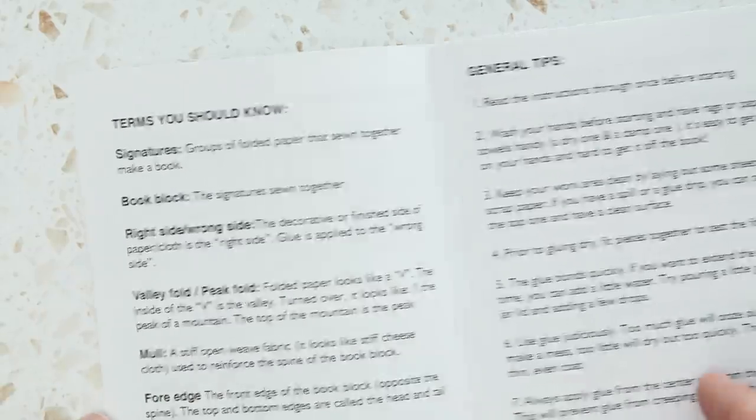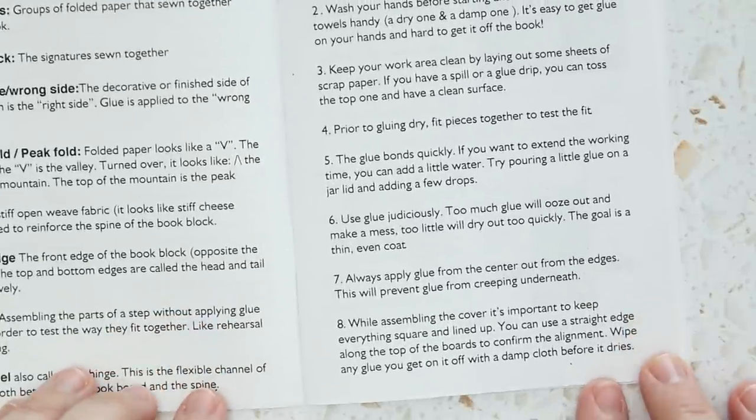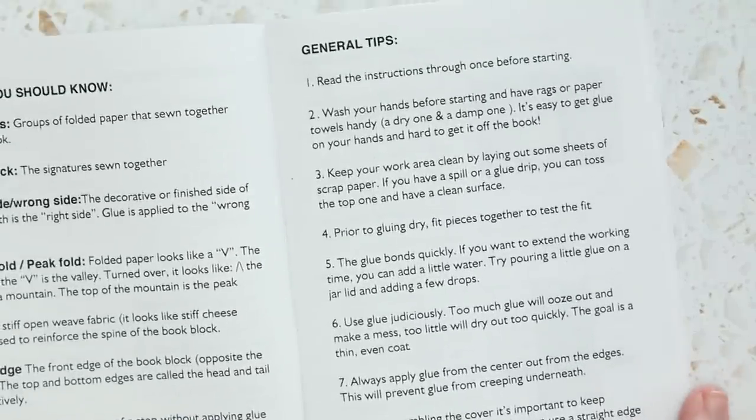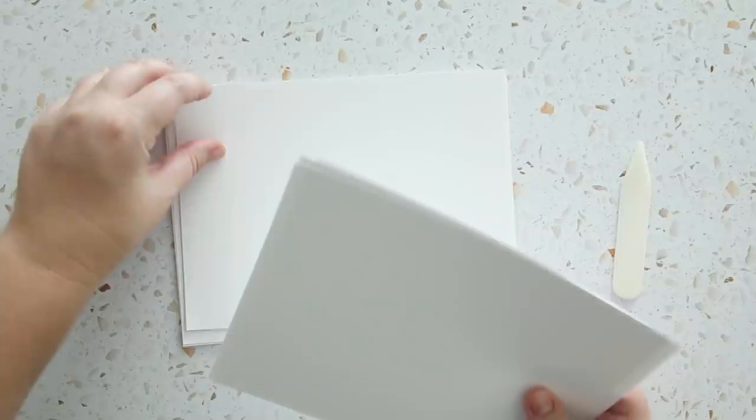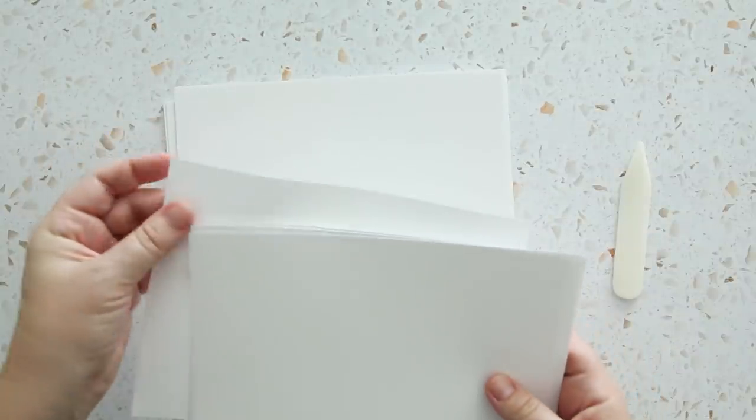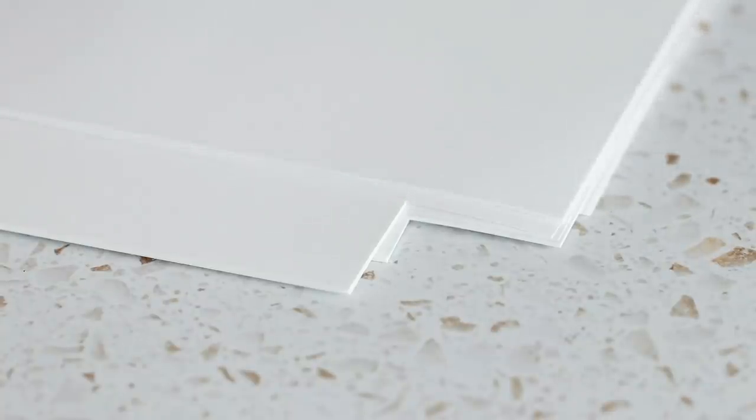It's nice that the instructions include terms, in case you're a total beginner, and you don't know what a book block is or a signature, along with some general tips. I'm going to follow the instructions, starting with sectioning out the sheets of paper.